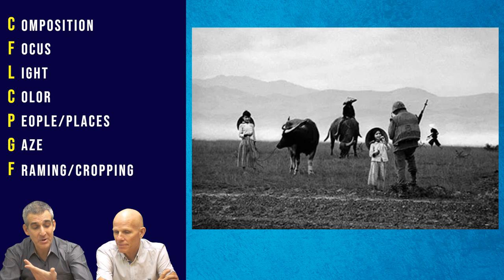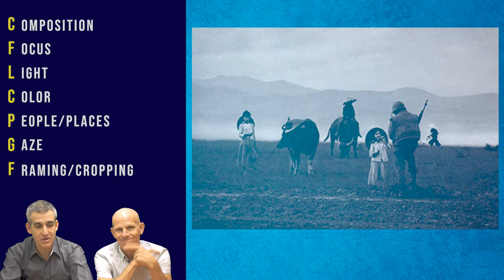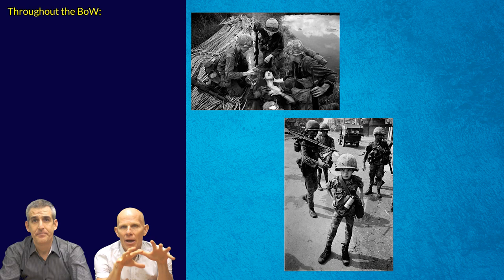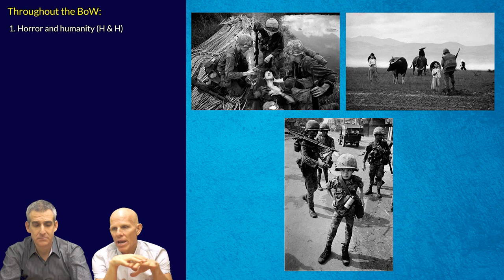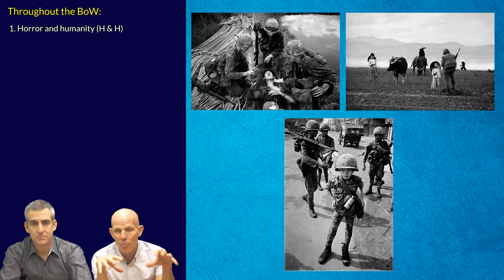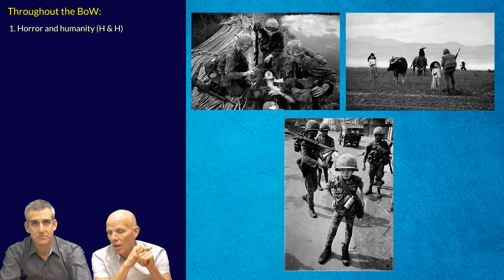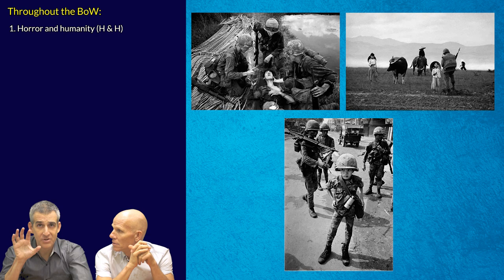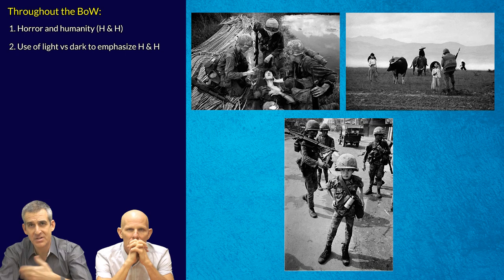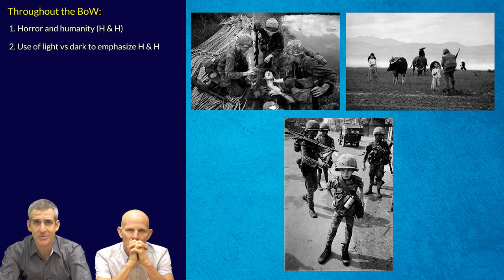In class, we rarely look at just one image — we like to think about bodies of work. Looking at these three images together, we want to think about the commonalities in Philip Jones Griffiths' body of work. He depicts both horror and humanity across a range of emotions. He's not pulling any punches with some graphic images, but he's also showing the humanity of the Vietnamese people and of the soldiers at war. Typically, those pockets of humanity are accentuated by light, and we can see that stark contrast and dichotomy between horror and humanity in his use of black and white.